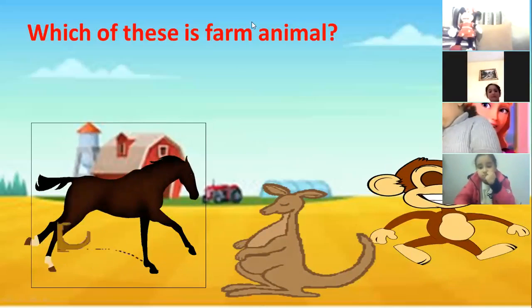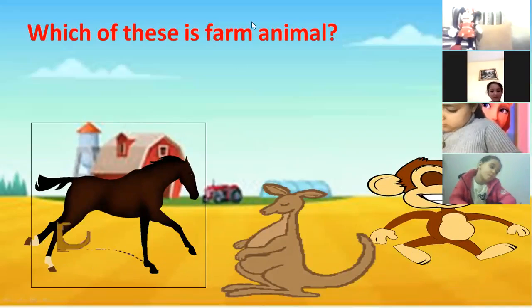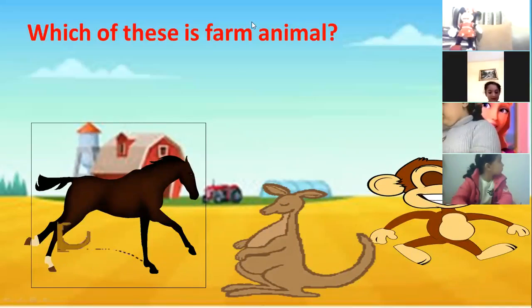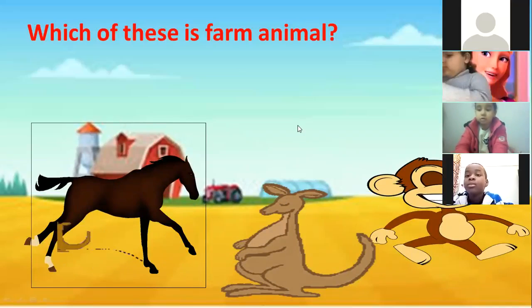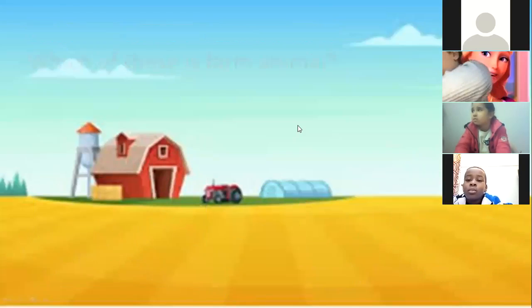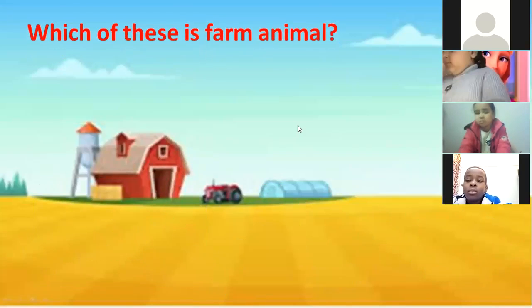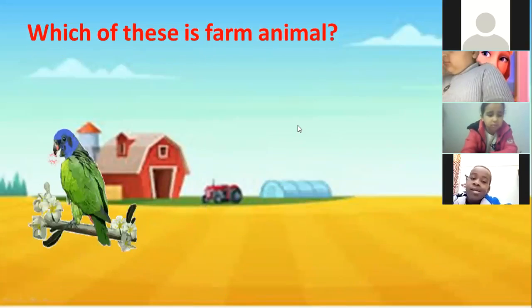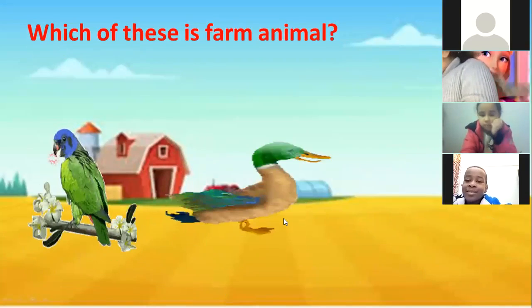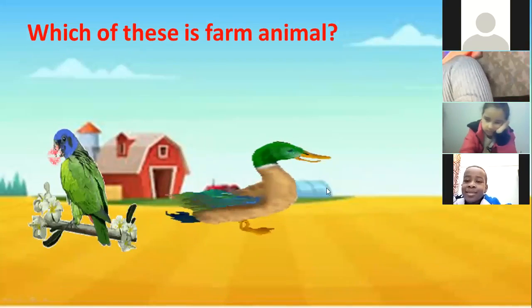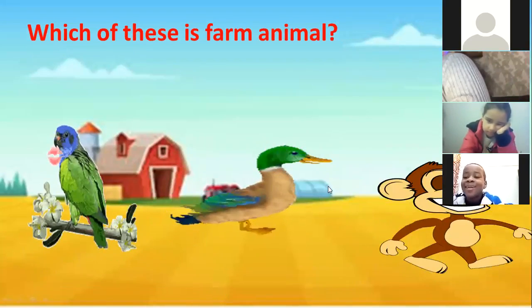Now Alia will answer with me. Unmute yourself, Alia. Yes, teacher. Now you will tell me which of these is also a farm animal. You have to choose: parrot, duck, or monkey.